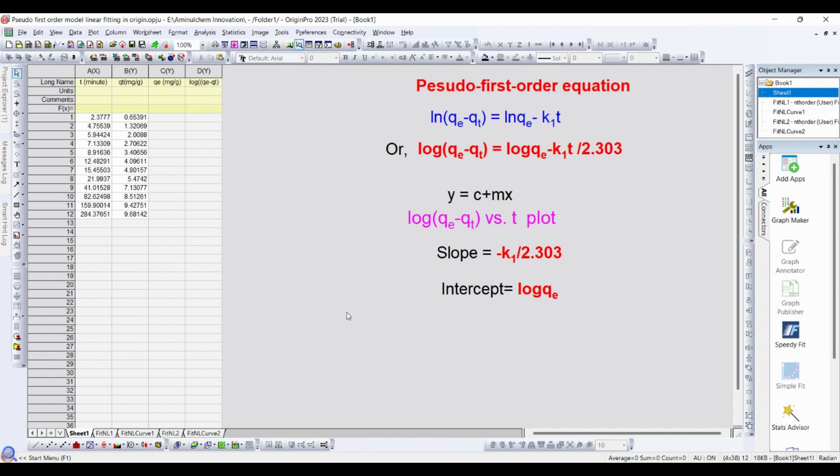in this video I would like to show you how to fit pseudo-first-order equation in the form of ln(qe - qt) = ln(qe) - k1*t. Or if you take log, which is log(qe - qt) = log(qe) - k1*t / 2.303.